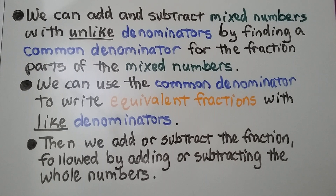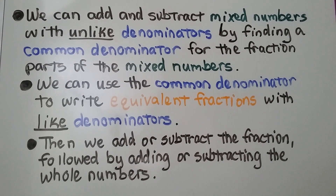We can add and subtract mixed numbers with unlike denominators by finding a common denominator for the fraction parts of the mixed numbers. We can use the common denominator to write equivalent fractions with like denominators. Then we add or subtract the fractions, followed by adding or subtracting the whole numbers.